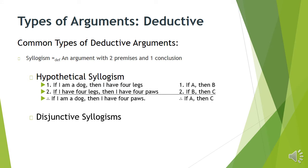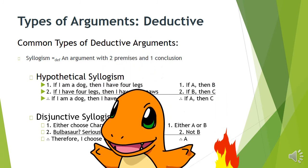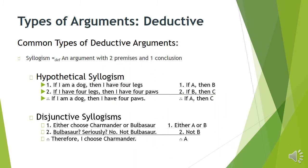There's also the disjunctive syllogism — a two-premise argument with a conclusion involving 'either/or.' Either choose Charmander or Bulbasaur. Bulbasaur? Seriously? No, not Bulbasaur — I'm not choosing Bulbasaur. So I choose Charmander. You've got two options, A or B; I'm not choosing B, so I have to choose A. Very straightforward argument.